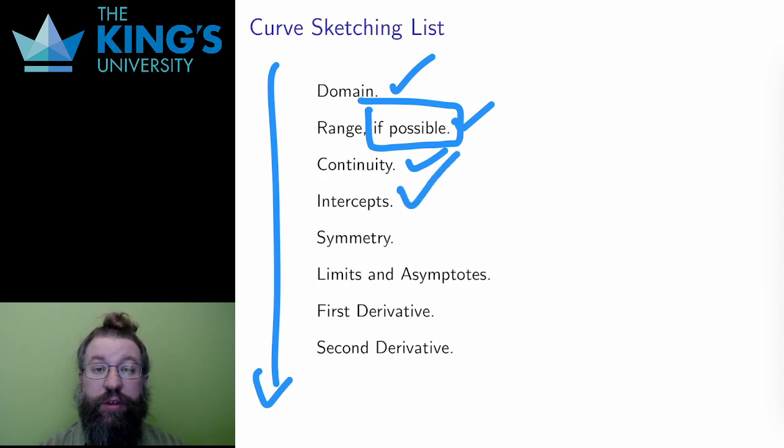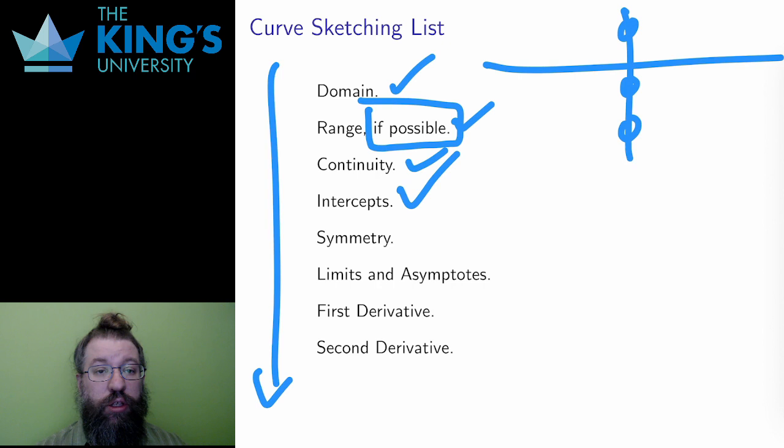Next, I want to consider intercepts, where the function crosses axes. These are a nice few points that can help me start to get a shape of the graph. Finding the y-intercept is easy. I just evaluate f as long as 0 is in the domain. If 0 is not in the domain, then there is no y-intercept. For x-intercepts, I need to solve f equals 0. There may be none, one, a few, or infinitely many, depending on the solutions to this equation.